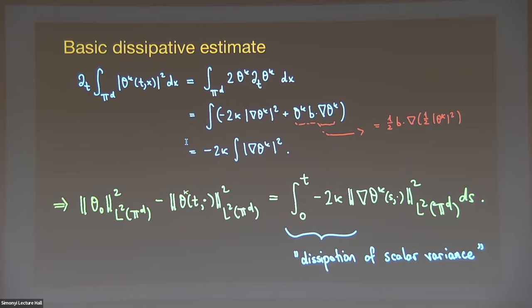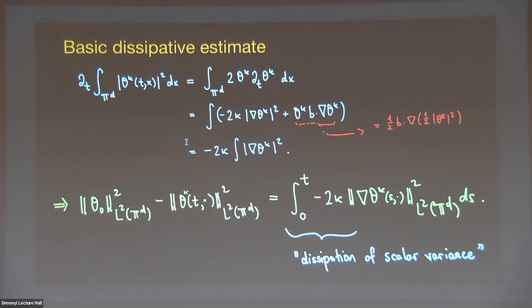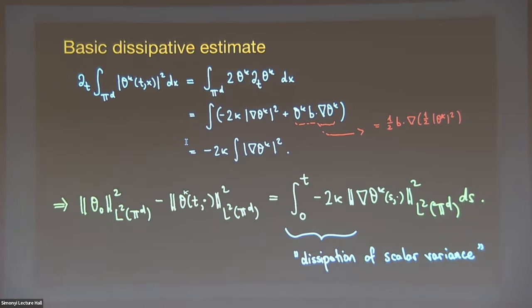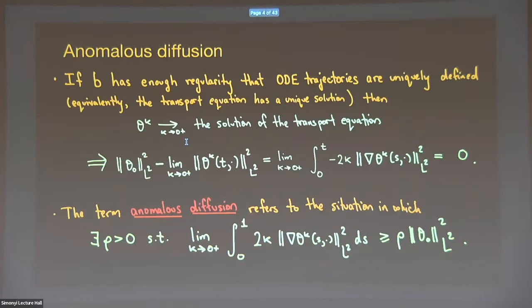Let's talk about the basic energy estimate. If you have a solution of an equation like the heat equation, you write down the L2 norm and take the time derivative to find decay. For this advection-diffusion equation, the advection term just drops out and you get the same estimate as for the heat equation with diffusivity kappa: the time derivative of the L2 norm equals minus kappa times the L2 norm of the gradient squared. Integrating this shows decay of the L2 norm through what's called the dissipation of scalar variance.